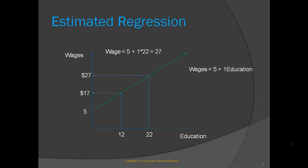So what can we say about the relationship between wages and education? For every one additional year of education, wages is expected to increase by $1 per hour. So in this case, beta 1 is equal to 1. This means for every one additional year of education, wages is expected to increase by $1 an hour.